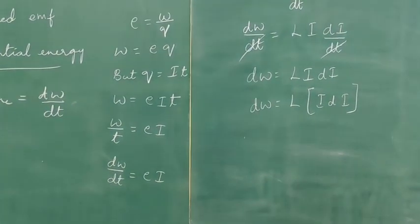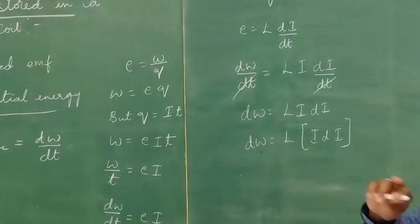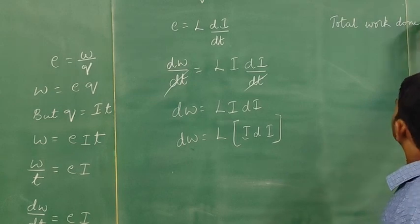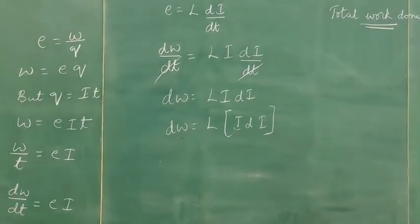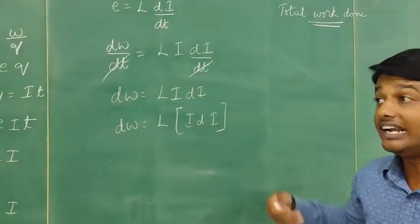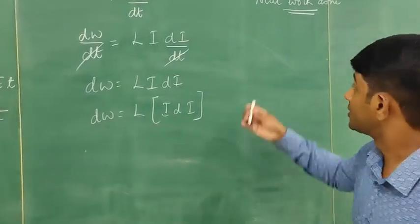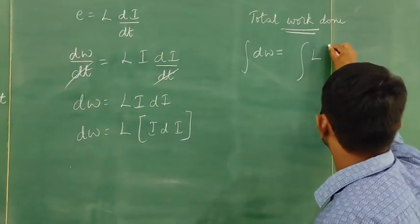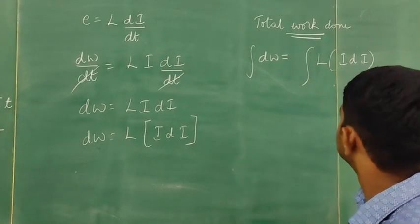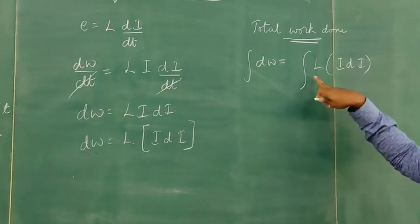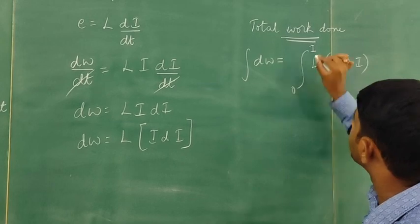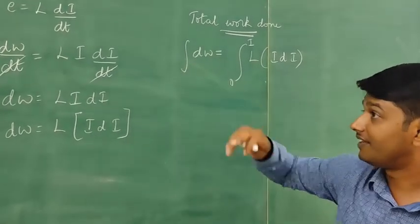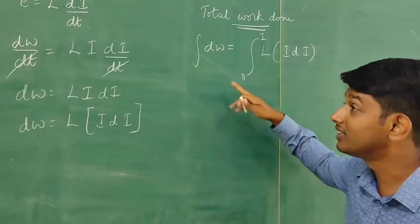Now let us write the total work done. To find the total work done for this expression, we need to integrate this equation. Integration of dW is equal to integration of L·i·di. Applying limits from 0 to I on the integrating symbol — because the minimum amount of current in the self-inductance coil is 0 and the maximum amount of current is I.